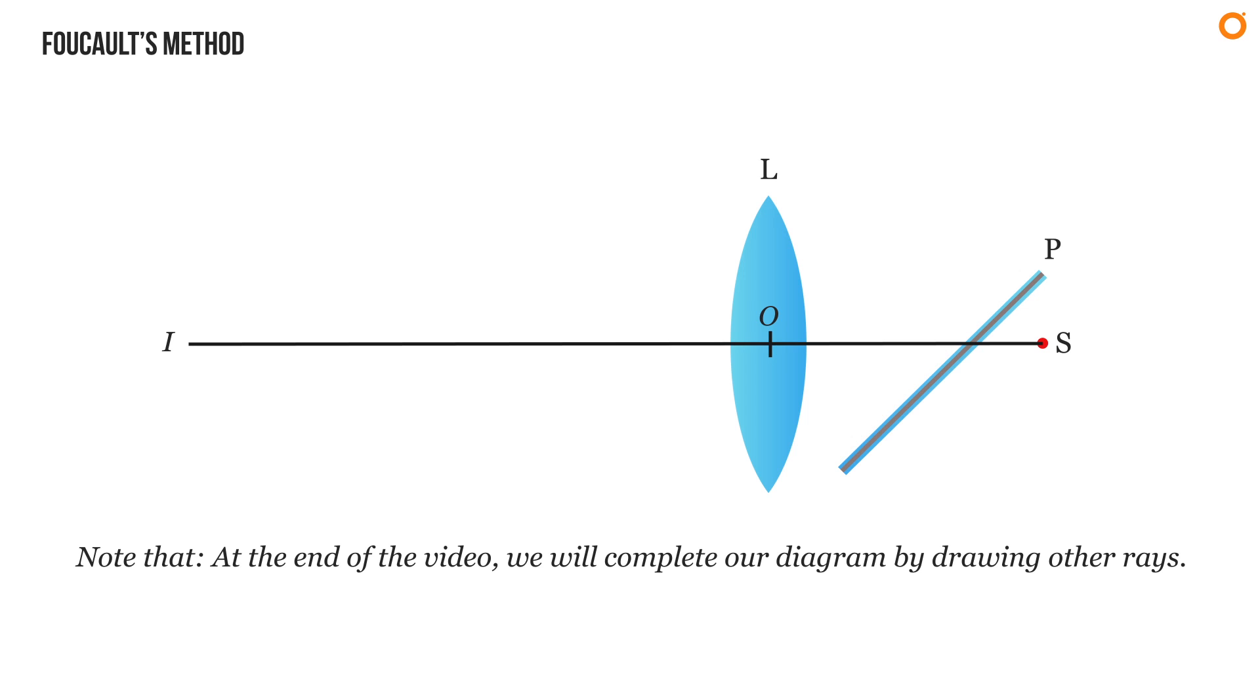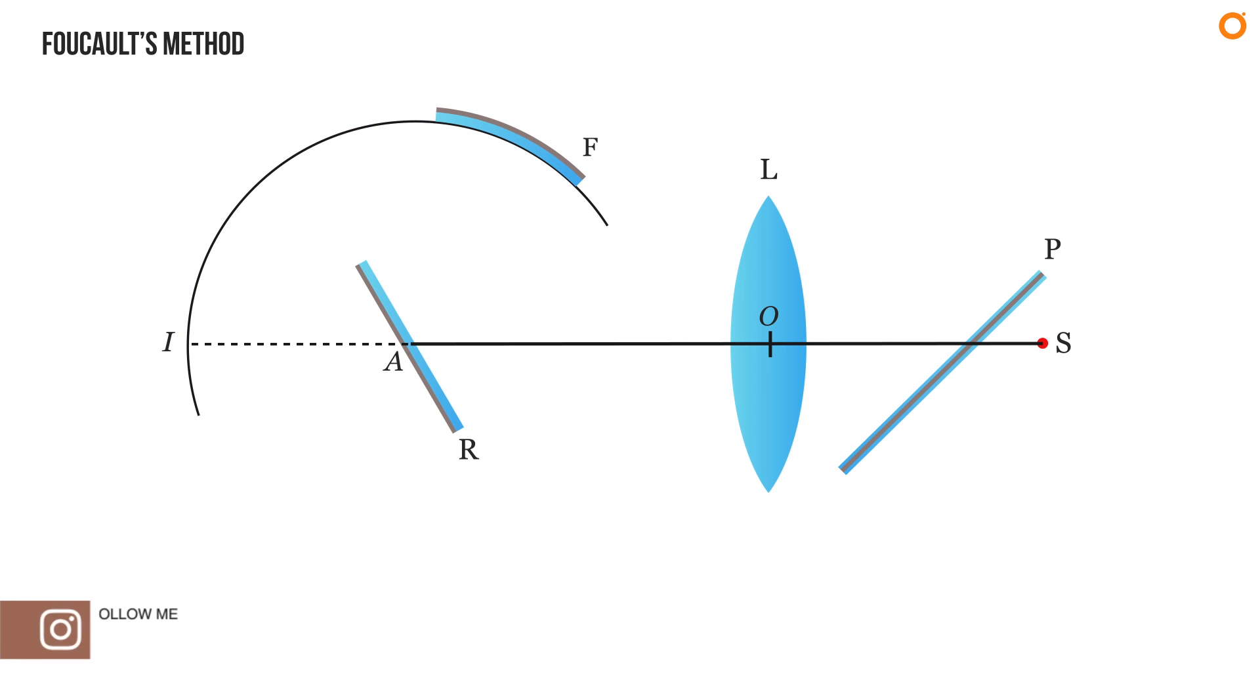Note that at the end of the video we will complete our diagram by drawing other rays. If the plane mirror R is placed at A, which is also the center of curvature of concave mirror F, then the ray of light gets reflected by plane mirror R and converges at pole O' of the concave mirror F. Light is then reflected back from F along its original path and finally forms an image at B1 after getting reflected from the half-silvered plane mirror P. This image can be viewed with the help of micrometer eyepiece E.